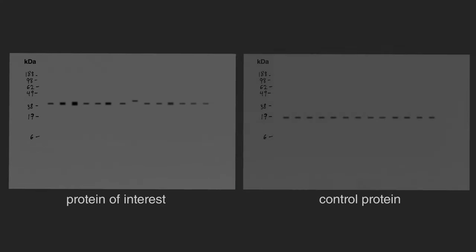Researchers also probe for proteins whose levels are known to remain constant within the experimental treatment to ascertain that the total amount of protein in all samples is relatively similar. To do this, the researchers can run a separate gel or strip the existing membrane of any bound antibodies to reuse it.